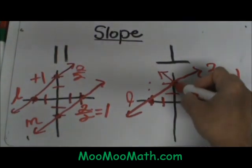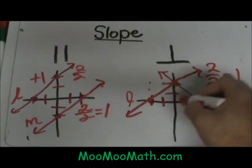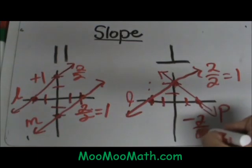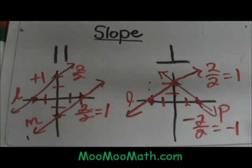Let's look at the slope of line P. We are going to count down 2 over 2. It is negative 2 over positive 2 which is negative 1. So they have opposite slopes.